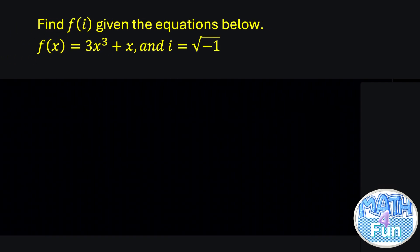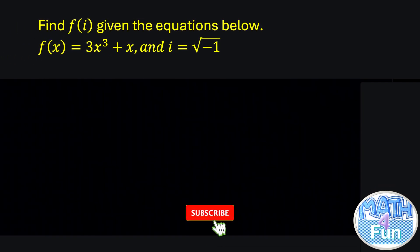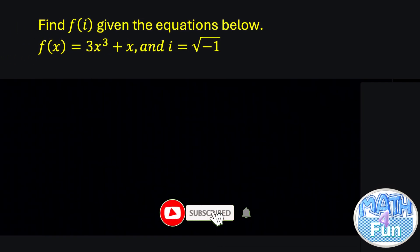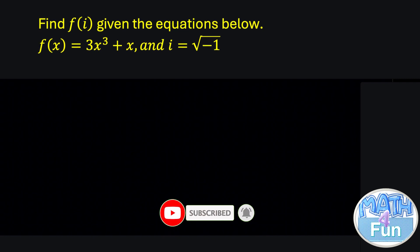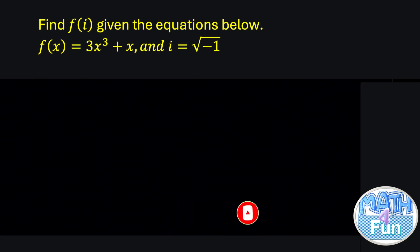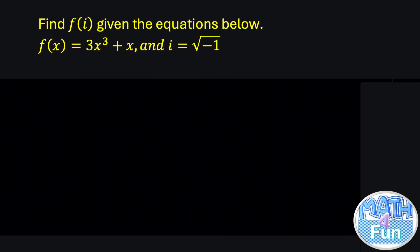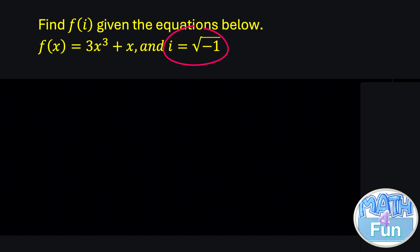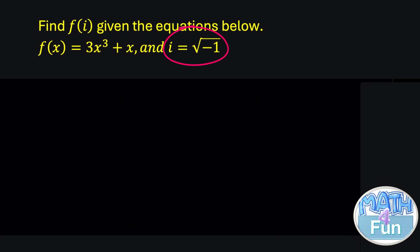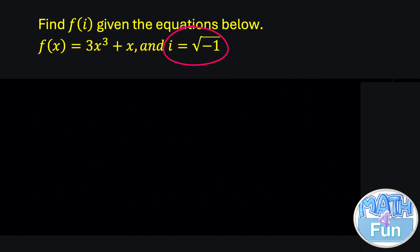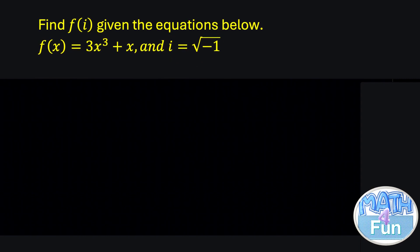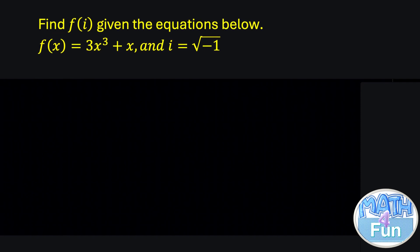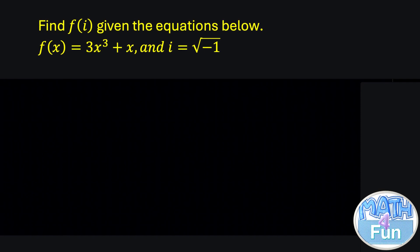Here, they are saying: find f(i) given the equations below. f(x) = 3x³ + x, while i = √(−1). Regarding i = √(−1), it's not going to affect this question. If you want to find f(i), you only need to replace i instead of x.